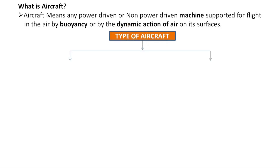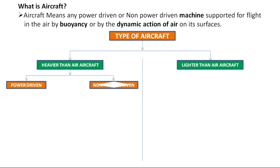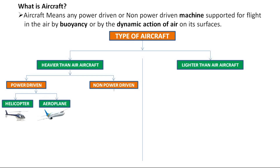Types of aircraft are basically divided into two main types: heavier-than-air aircraft and lighter-than-air aircraft. Heavier-than-air aircraft is again divided into two types: power-driven aircraft and non-power-driven aircraft. Power-driven aircraft is again divided into two types: helicopter and aeroplane. Non-power-driven aircraft includes only gliders.